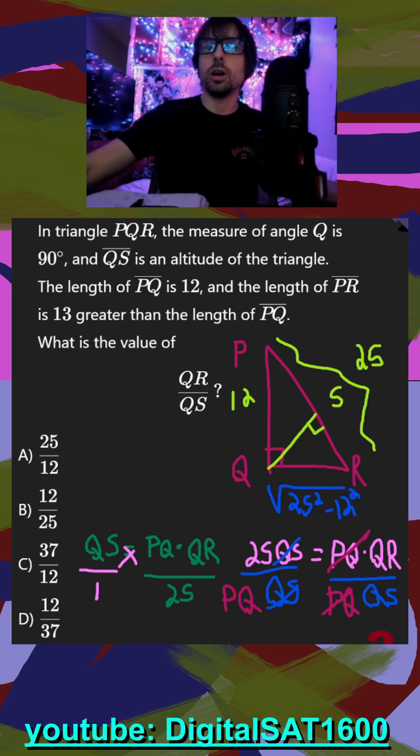So our final step, 25 over PQ was 12. And it looks like our final answer here is going to be A.